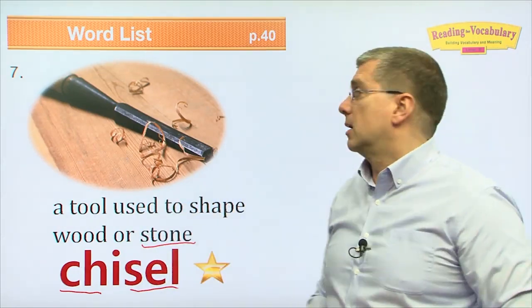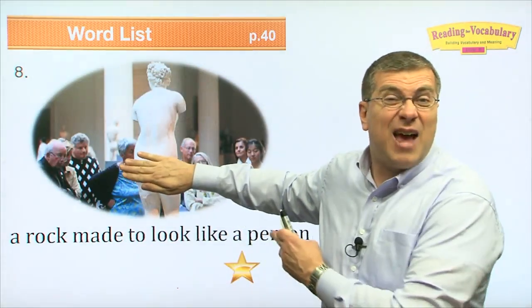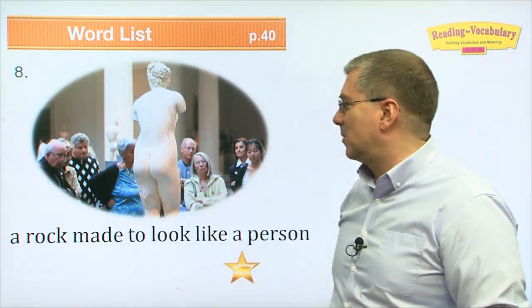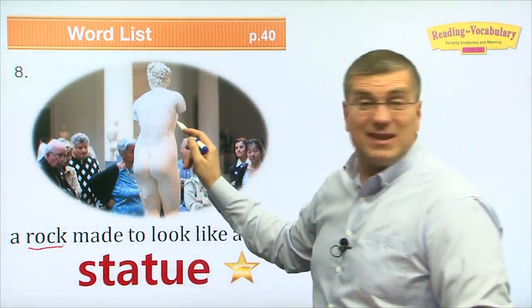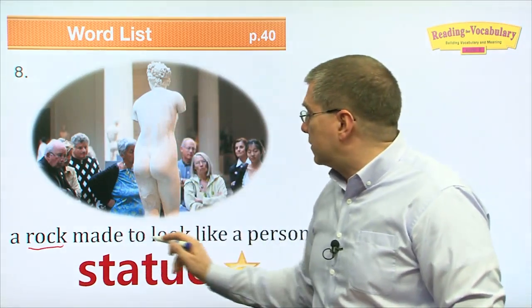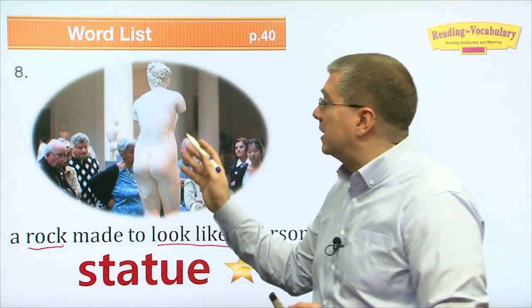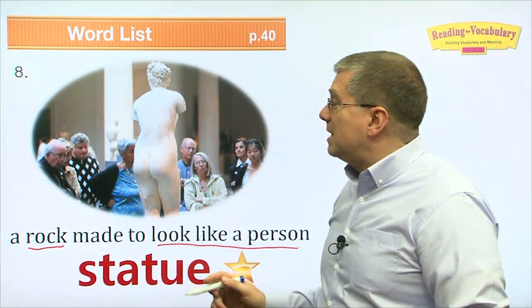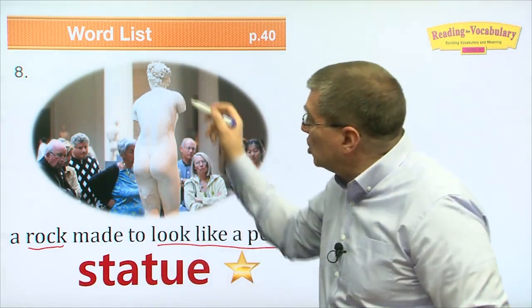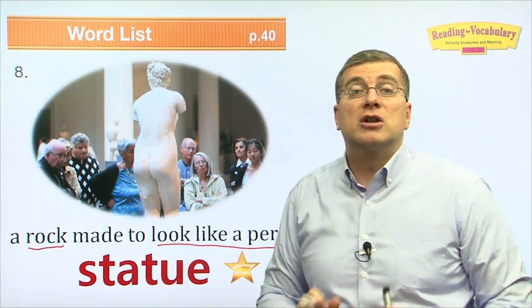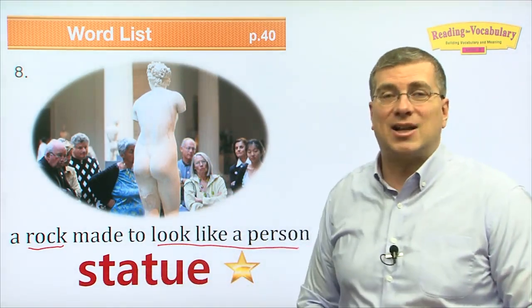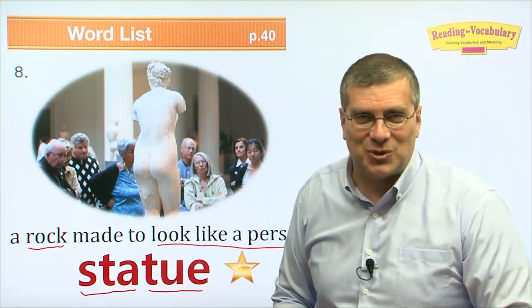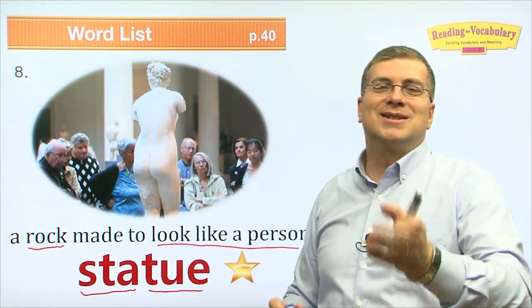Number eight: this is a statue — a rock made to look like a person. The person who made this statue is a really, really good artist. They used a chisel and a hammer to shape the rock into a shape that looks like a person. We call that a statue.